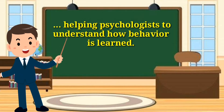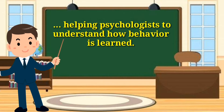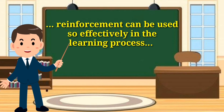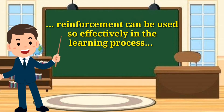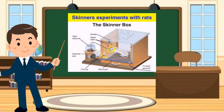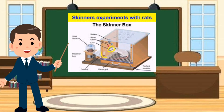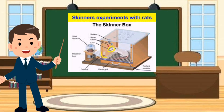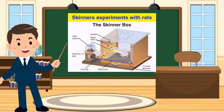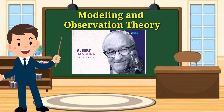Skinner's operant conditioning explains why reinforcements can be used so effectively in the learning process and how schedules of reinforcement can affect the outcome of conditioning. To show how reinforcement works in a controlled environment, Skinner placed a hungry rat in a box that contained a lever. As the rat moved around inside the box, it would accidentally press the lever, causing a food pellet to drop into the box.